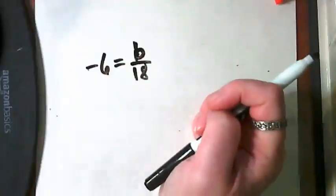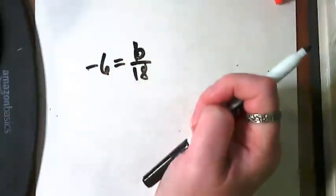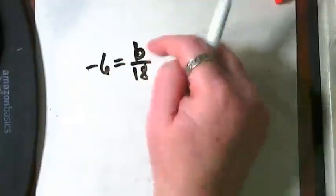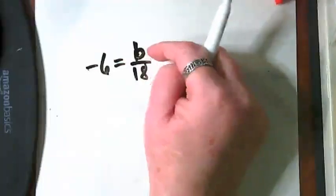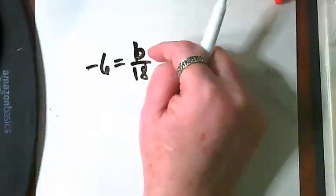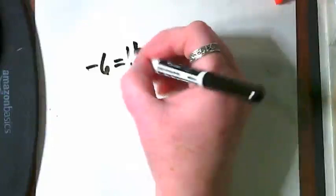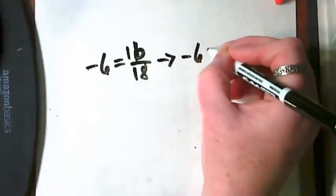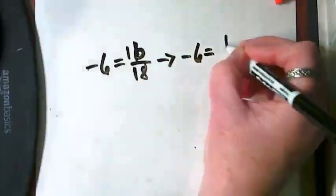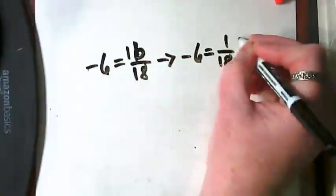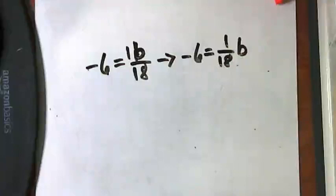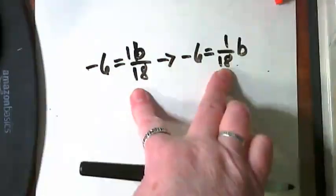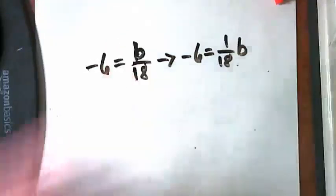But I want you to think about what you know about invisibles. Remember that was our main focus on Friday was really pointing out where there were some invisibles. What is the invisible number in front of every blank variable? There's a one there. I could rewrite this equation as negative six is equal to one over 18 times b. These mean the same thing.